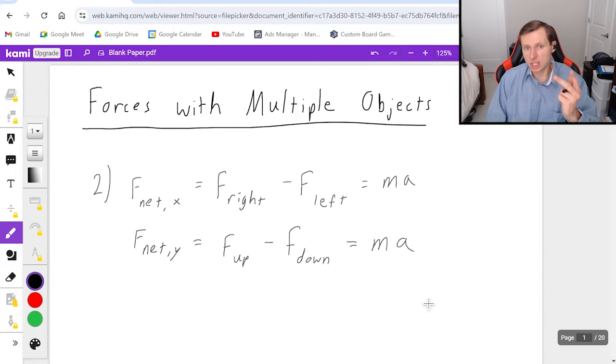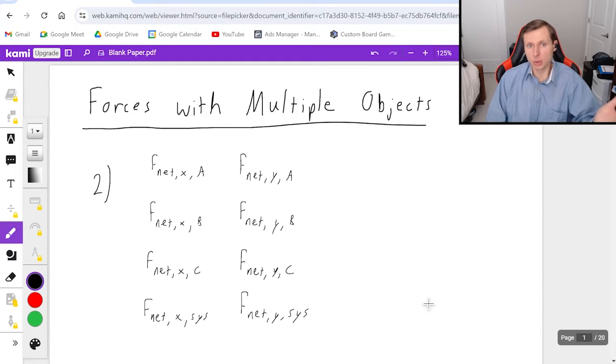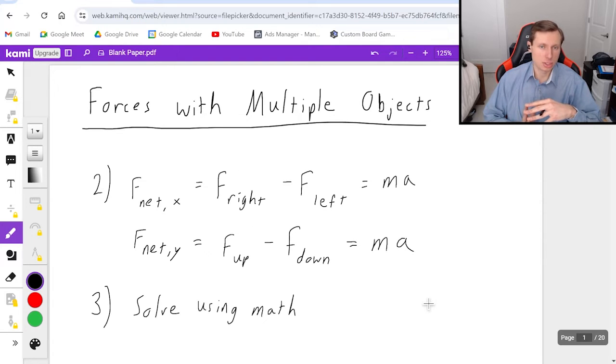Then step two, Newton's second law, F net x and F net y. Remember that for Newton's second law, when you have multiple objects, there's quite a few different equations you can write. For instance, if you have two boxes, you can write F net x and F net y for both boxes individually or both boxes combined, which we usually call the system. Then step three is solve using math. Very simple, if you get that far.